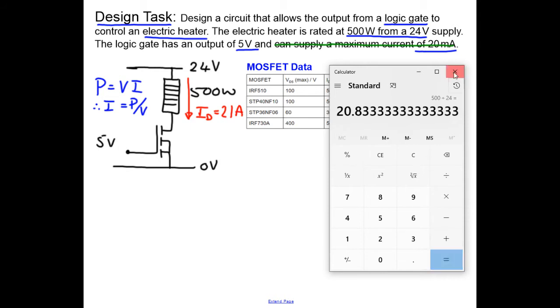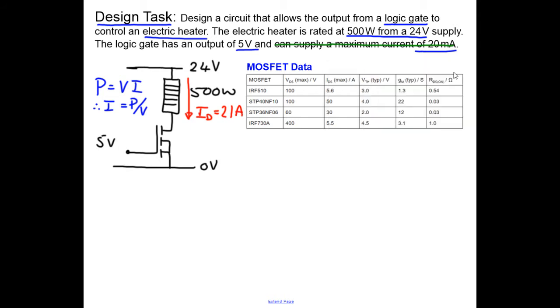So having completed our initial calculations and circuit design, we can look at our MOSFETs. First of all, we have the drain source voltage. We've got four different MOSFETs here, and this one, this one, this one, and this one are all suitable because they can all take at least 24 volts as their drain source voltage. The drain source voltage is the maximum voltage between the drain and the source. So that doesn't really help us at all.